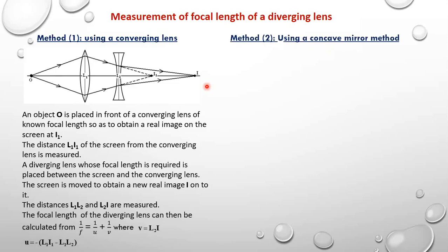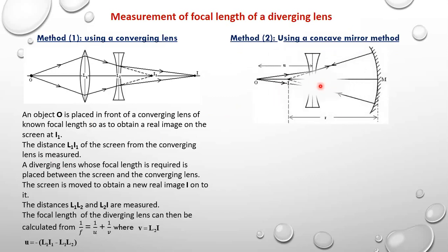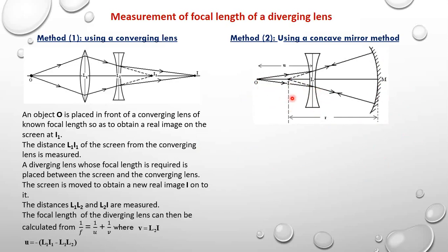Let's look at method 2 — using a concave mirror. Here, we place the diverging lens and a concave mirror coaxially. The concave mirror must have a known radius of curvature R, where R = 2F, so its focal length must be known. We then place the object O in front of the diverging lens.